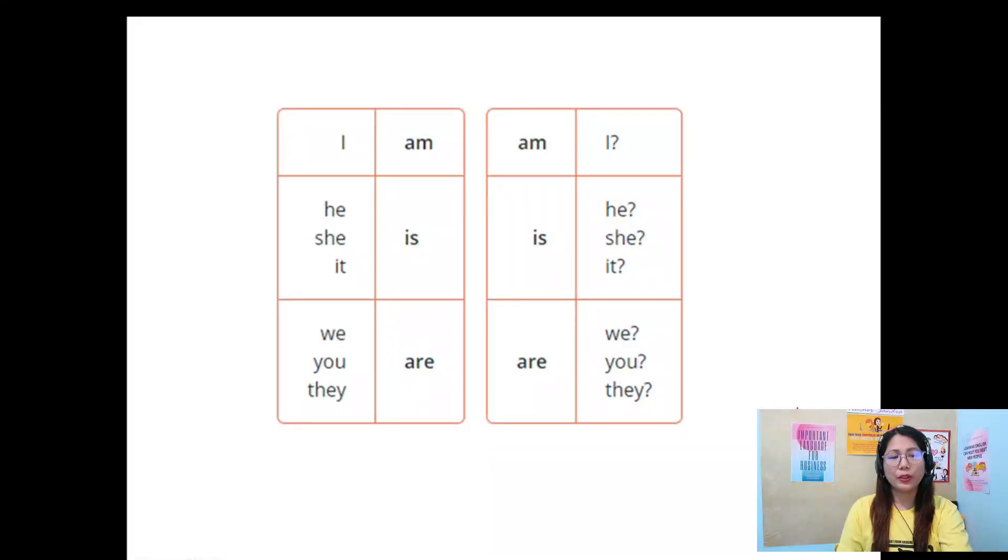So for questions or interrogative sentences, we have, okay, this one, the first column, affirmative or positive. I am. But in question, we have to change the position. In affirmative, subject plus verb.